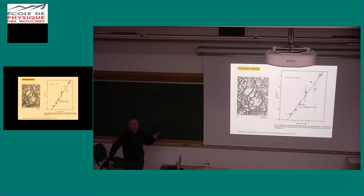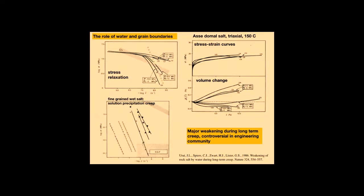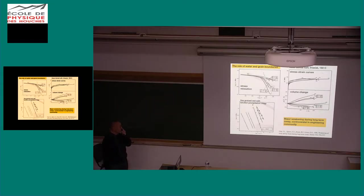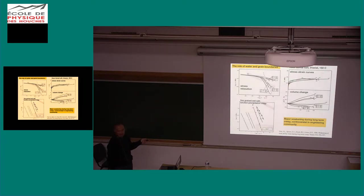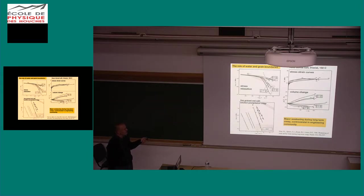When I started my PhD and we started working with Chris Pyers, we also took the domal salt from Germany — closer to us. Here are stress-strain curves very similar to everything measured before, at 150 degrees C and around 10⁻⁵ strain rate, but at two different confining pressures. At low confining pressure, the rock salt dilates a little — the volume change goes up. At high confining pressure, the rock salt compacts.